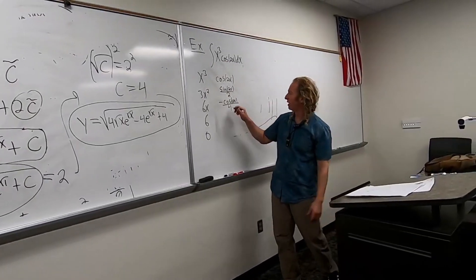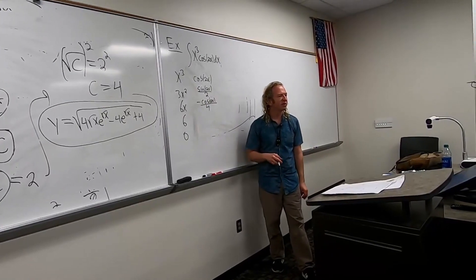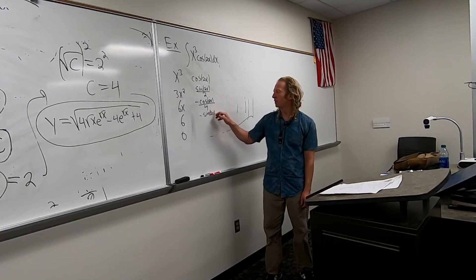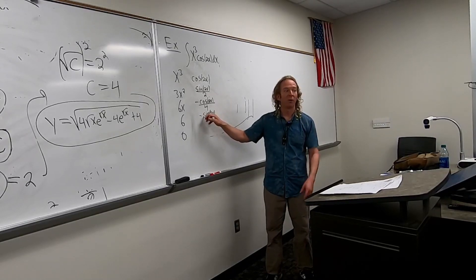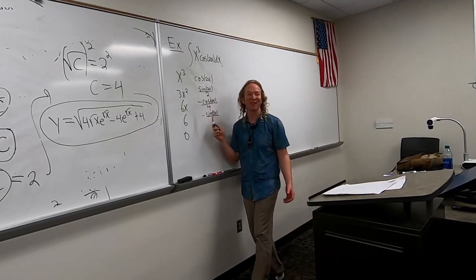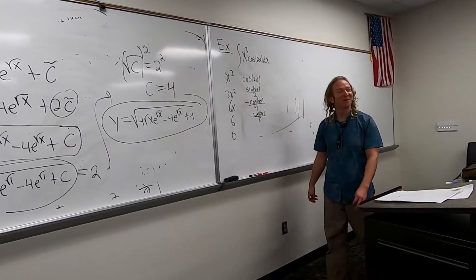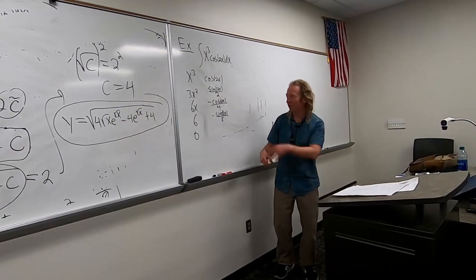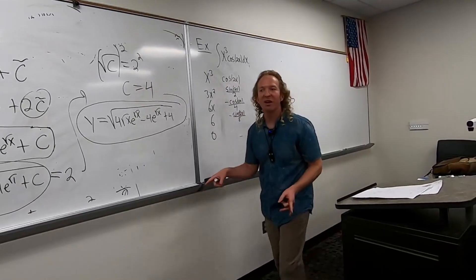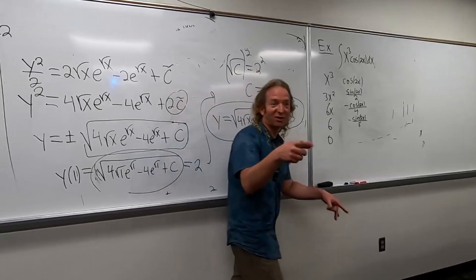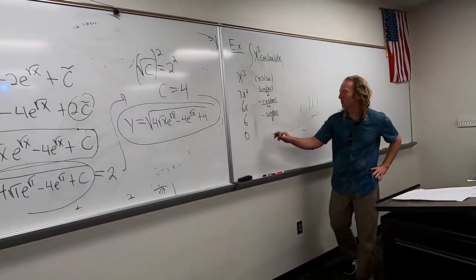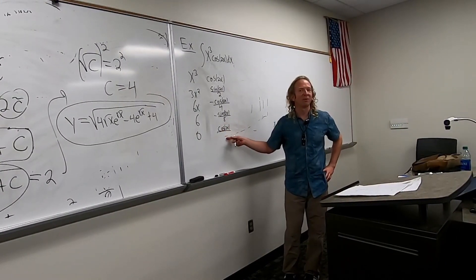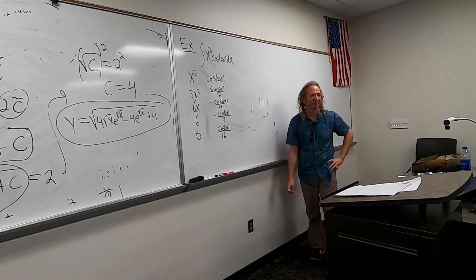Integrating negative cosine gives us negative sine 2x, and this time it will be over 8. When you integrate negative sine, what does that give you? Positive cosine — very good. Positive cosine 2x, over 16. Very good.